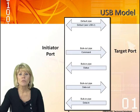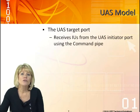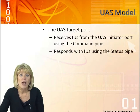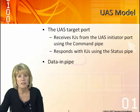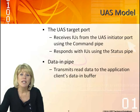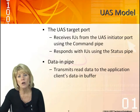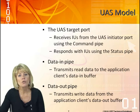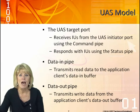The initiator port is on the left and the target port is shown on the right. It will receive IUs from the initiator port using the command pipe, and obviously it has to respond to those executions via the status pipe. For data in, it will transmit read data — so when the host reads data, that will come on the data in pipe. And when the host writes data, it will go out on the data out pipe.